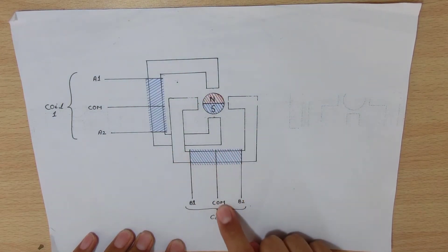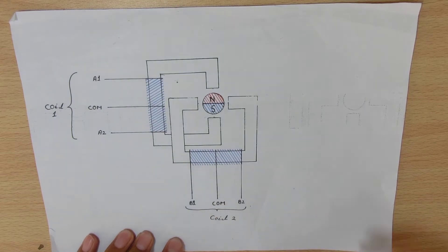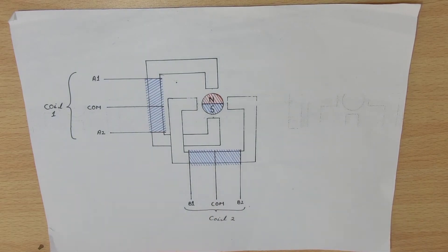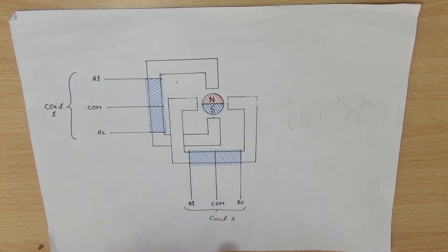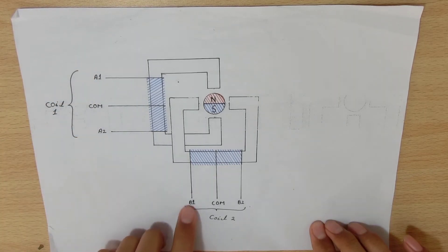Both coils have a center tap which is called the common wire. In a 6 wire motor, the common wires are not connected to each other. If we can find the coils, for example, A1, A2, B1, B2...